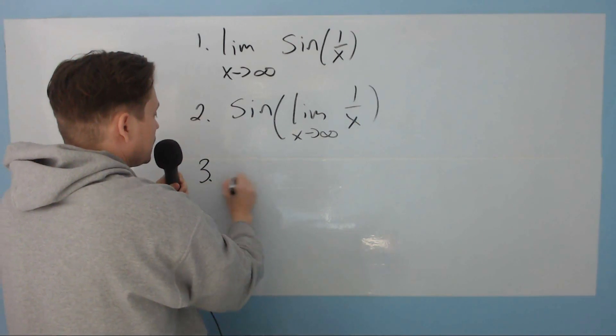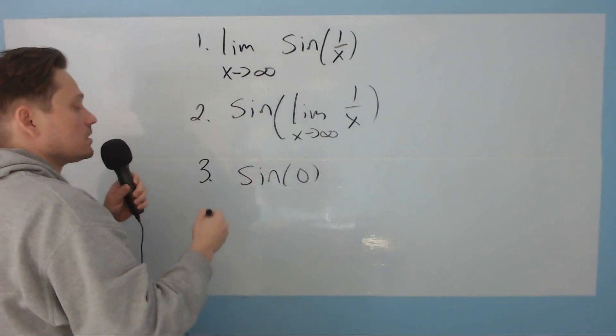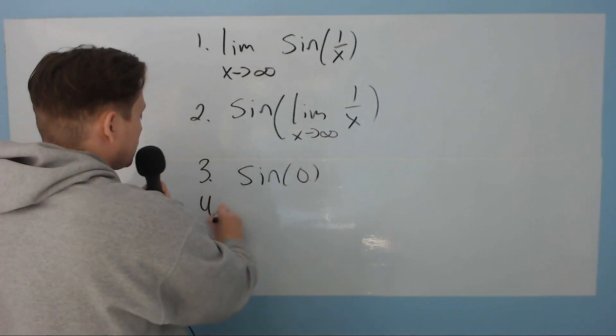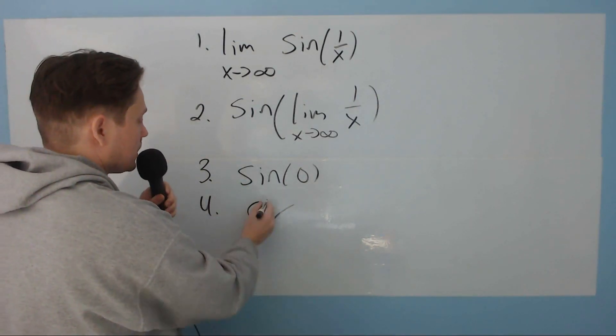Hopefully by now you've studied at this point that the expression within the parentheses has a limit of 0, so you end up with sine of 0. And when you refer, for example, to the unit circle or just memory, you know that this value here is 0, and that is then the correct answer, 0.